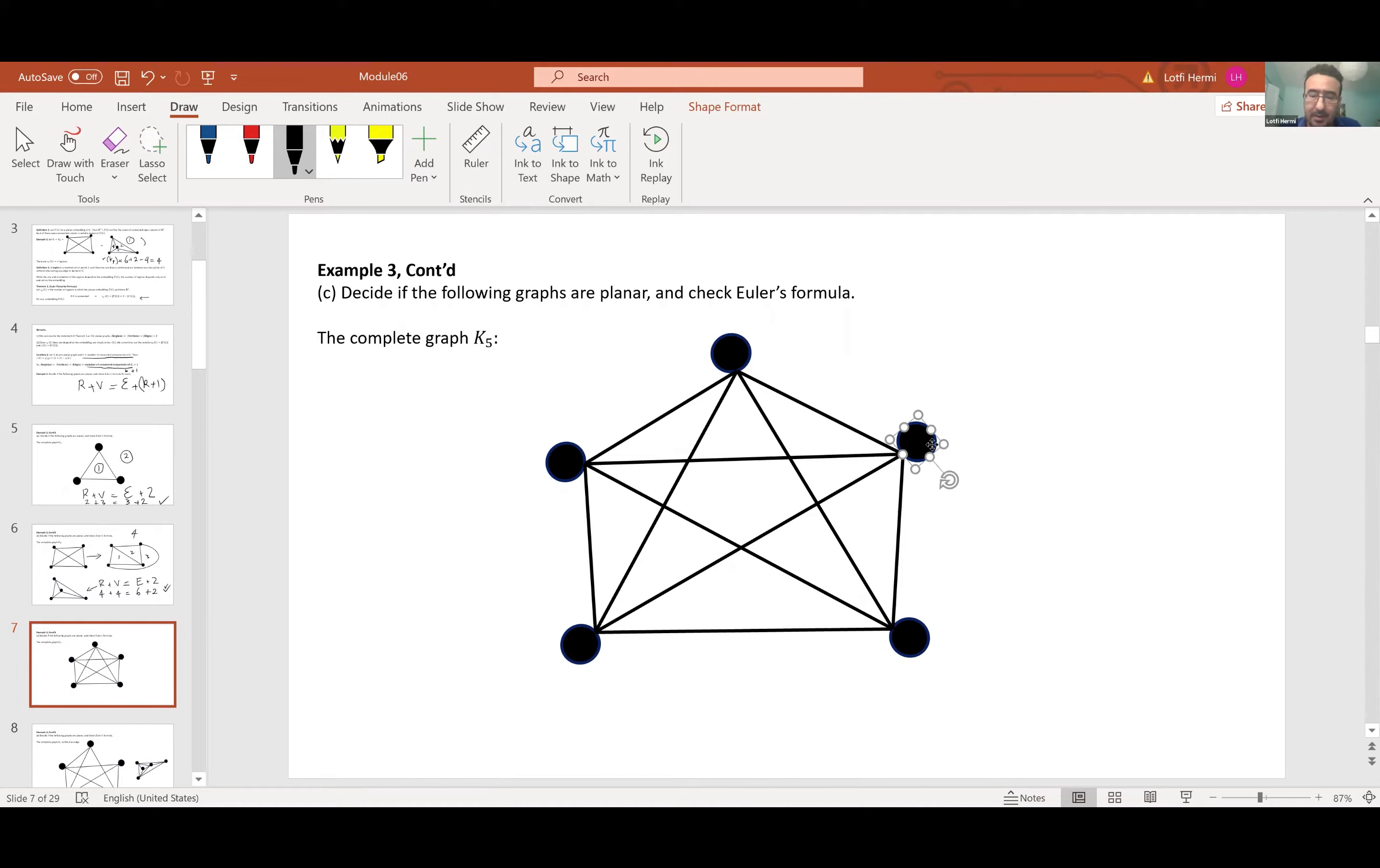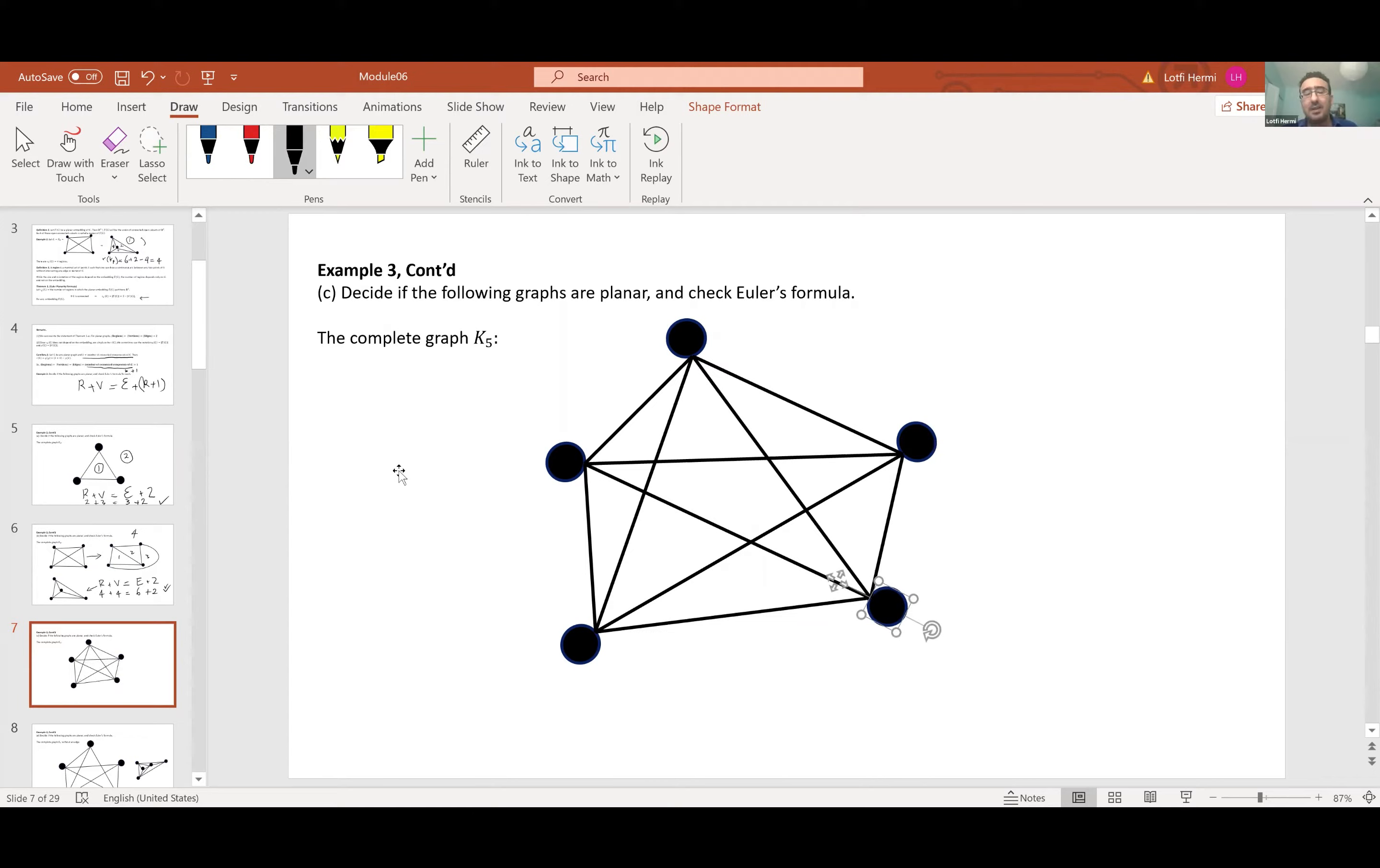Alright, so let's see if I can move any of these. I'm going to try to move it in. I'll try to move this other one here, but you can see the edges are still intersecting. In fact, this is not possible for K5. We will show that K5 is indeed not planar.